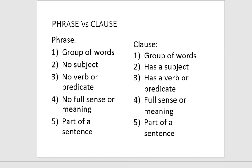Number two: a phrase has no subject, while a clause has a subject. A clause will always have a subject. Number three: a phrase has no verb or predicate — it is impossible to have a verb in a phrase. In a clause, number three, it has a verb or predicate. It is compulsory for a clause to have a full verb and a subject.